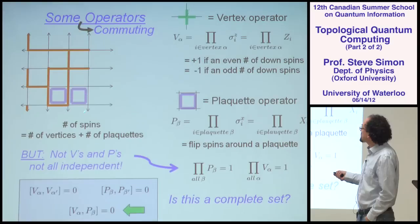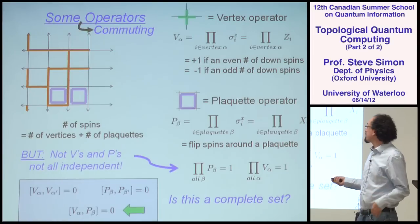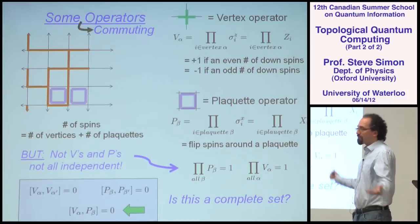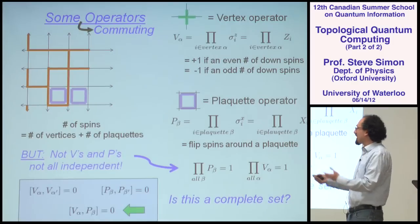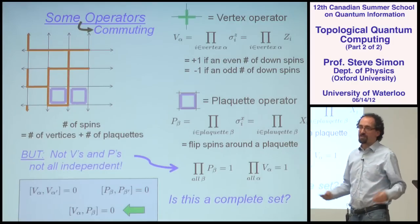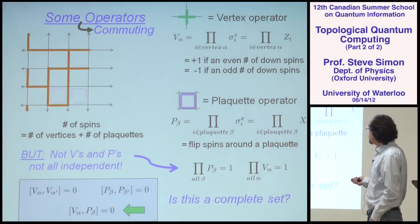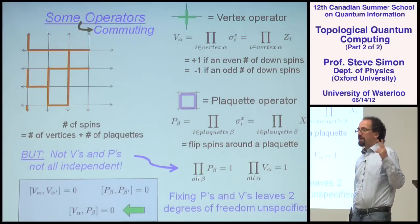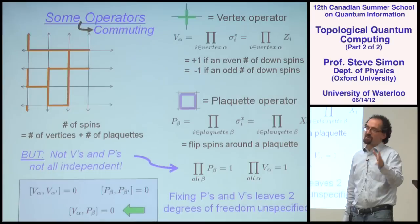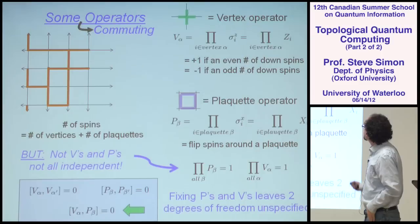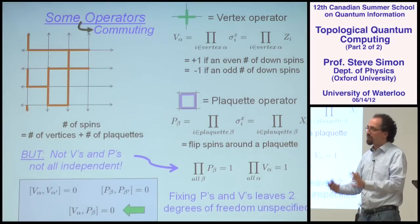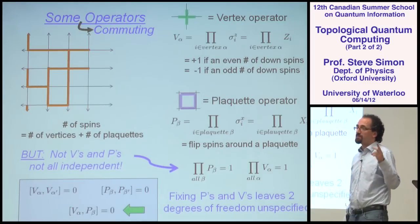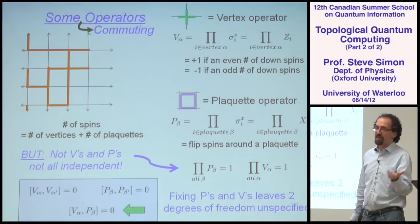So we actually expect that if I fix all the plaquettes and vertices in the entire system, there will be two degrees of freedom left unspecified. These are going to be the stabilizers for our codes — mutually commuting operators. We're going to fix the eigenstates of these plaquette and vertex operators, and there will still be two logical qubits left over for us to play with.